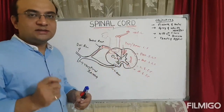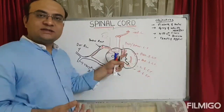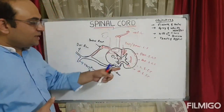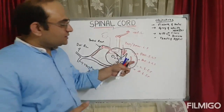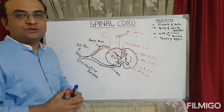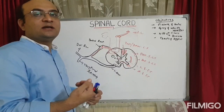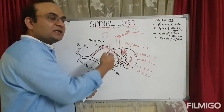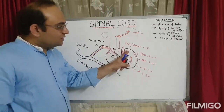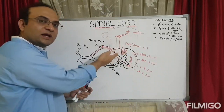Summary of ascending tract functions: posterior column fibers (fasciculus gracilis and fasciculus cuneatus) carry two-point discrimination, vibration, conscious proprioception, and tactile discrimination. Lateral spinothalamic tract carries pain and temperature. Anterior spinothalamic tract carries crude touch. Anterior and posterior spinocerebellar tracts carry unconscious proprioception. In the posterior column, fasciculus gracilis carries fibers from sacral, coccygeal, lumbar, and lower thoracic regions (medial), while fasciculus cuneatus carries upper thoracic and cervical fibers (lateral).